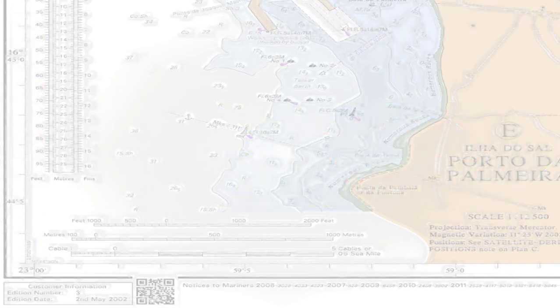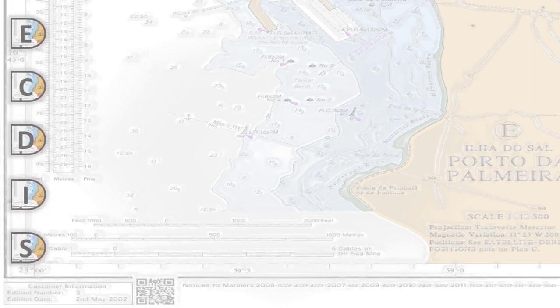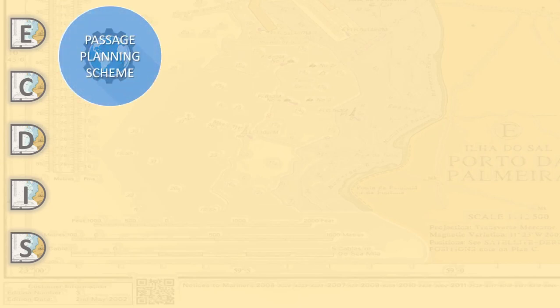According to SOLAS chapter 5 regulation 27, nautical charts and nautical publications such as sailing directions, list of lights, notices to mariners, tide tables and all other nautical publications necessary for the intended voyage shall be adequate and up-to-date. The required charts and publications must therefore be available on board and updated as specified by the notices to mariners in accordance with the latest maritime safety information.